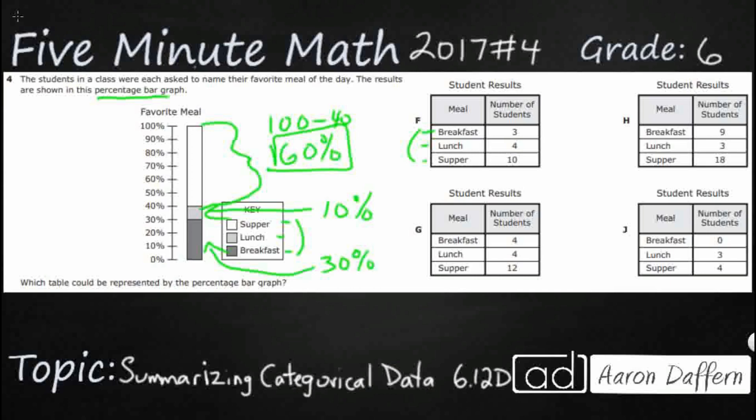Now one thing about our percentage bar graphs is that they always add up to 100. They go from zero to 100. So 60 and 10 is 70 and then an extra 30 is going to be 100. So we need to find which of these tables matches that.